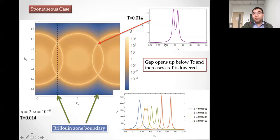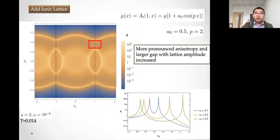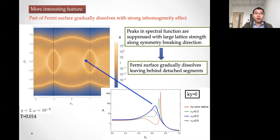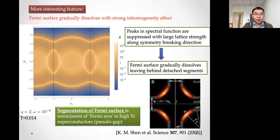There is a gap below the critical temperature, and this gap increases as the temperature is lowered. If we add an ionic lattice, the peaks become more pronounced and there is more anisotropy. A very interesting feature is that in the symmetry-breaking direction (kx direction), the peaks in the spectral function are suppressed when the lattice effects are strong - meaning the Fermi surface disappears, leaving behind detached segments. This feature is reminiscent of Fermi arcs, in particular in high-Tc superconductors.